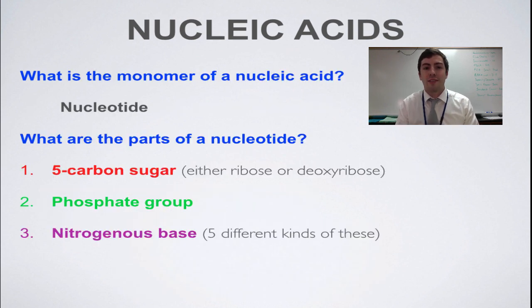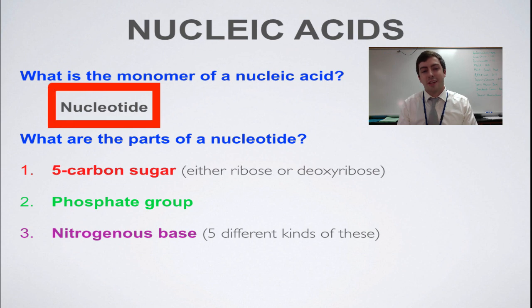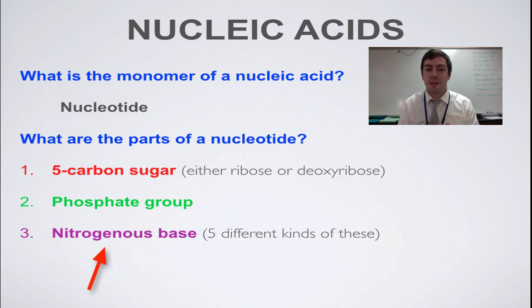What's the monomer of a nucleic acid, you ask? It's a nucleotide. A nucleotide consists of three different parts. You have a 5-carbon sugar, a phosphate group, and a nitrogenous base.